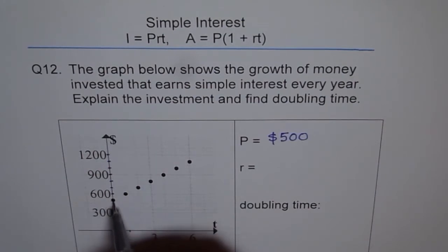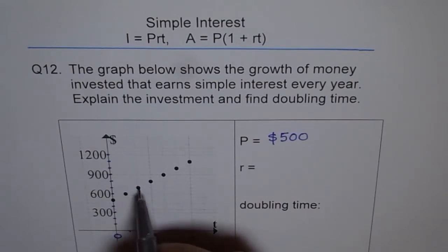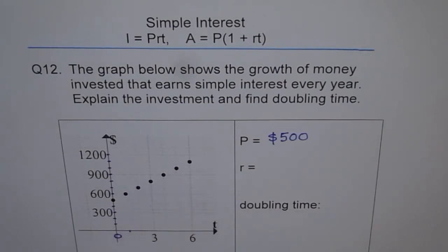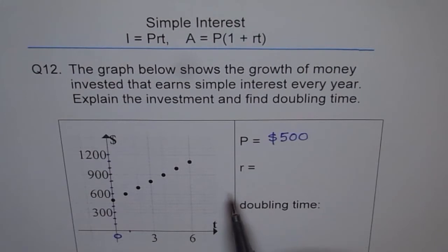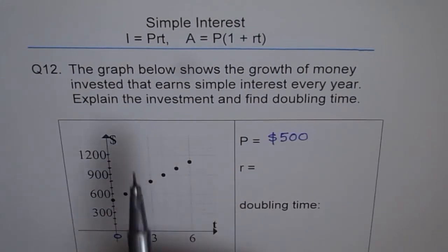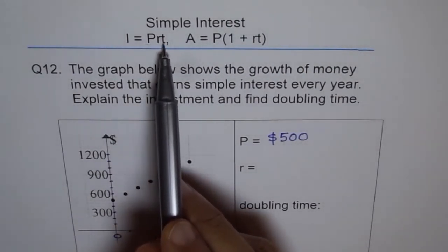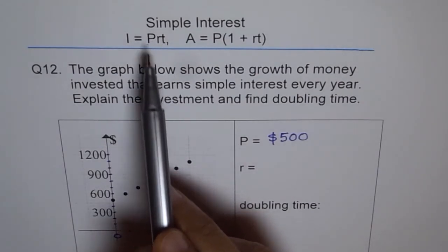Now, how does it grow? In the first year it grows from $500 to $600 — that is $100. The next year, another $100. So every year the growth is $100. Because the growth is constant, it is a simple interest case, not a compound interest case.